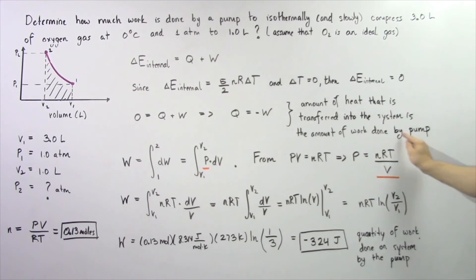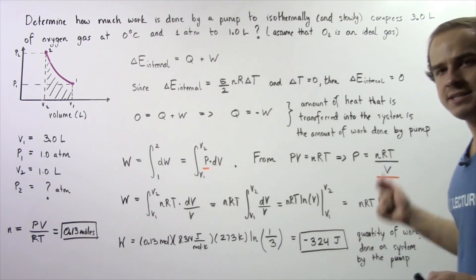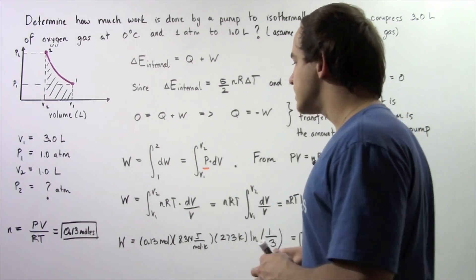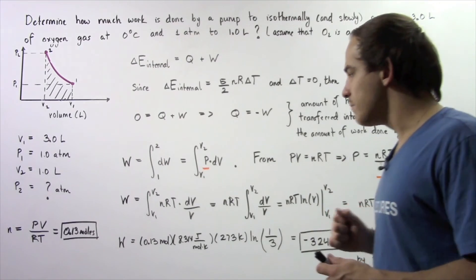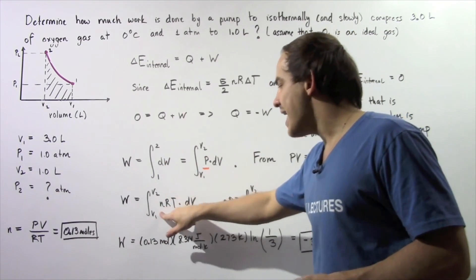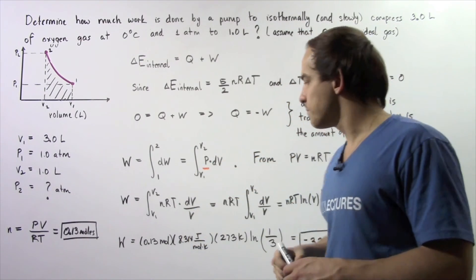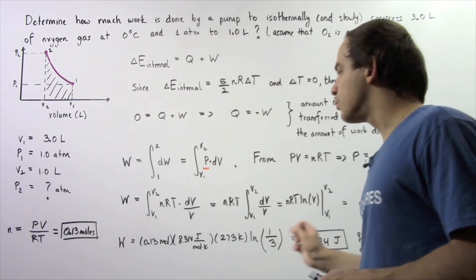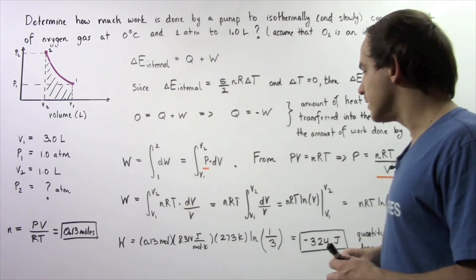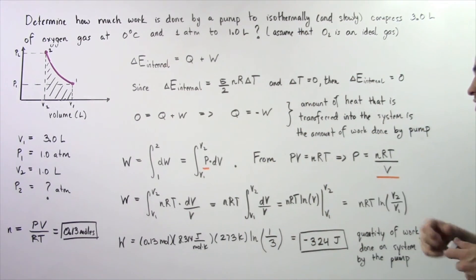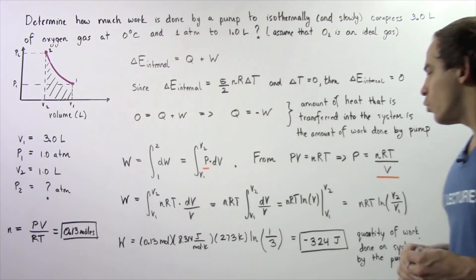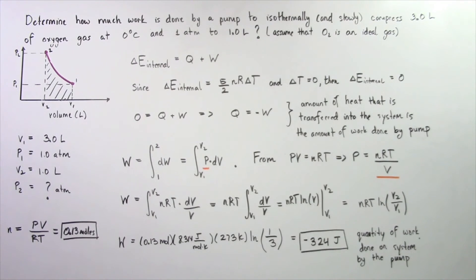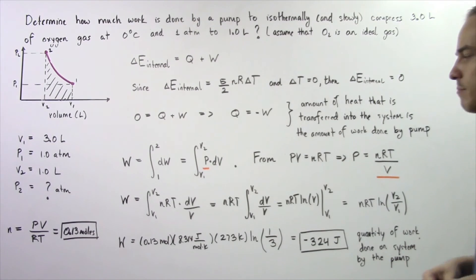N, R, and T are all constants, so NRT is a constant that can be pulled out of the integral. We get the work equals NRT times the integral from V1 to V2 of dV/V. Integrating gives NRT × ln(V) evaluated from V1 to V2. Applying the laws of logarithms, the result is W = NRT × ln(V2 / V1).